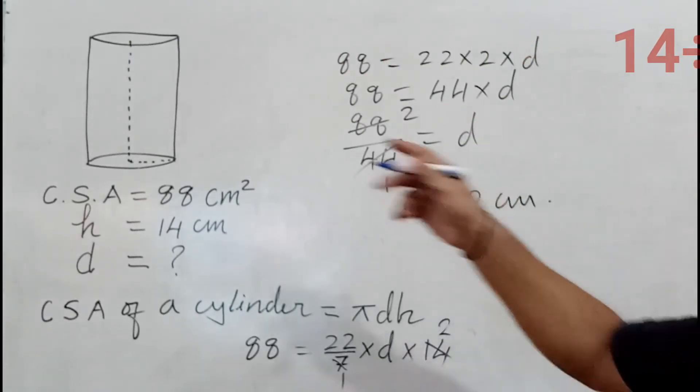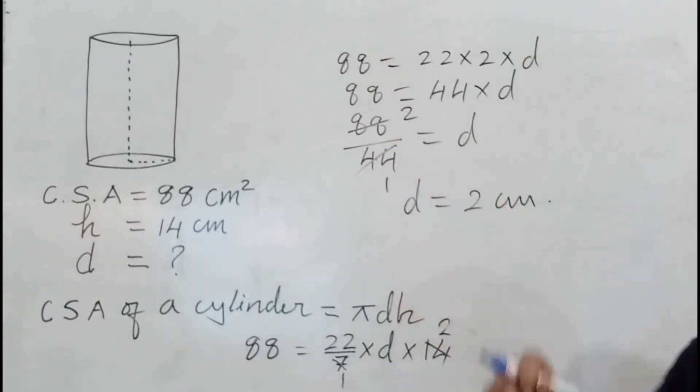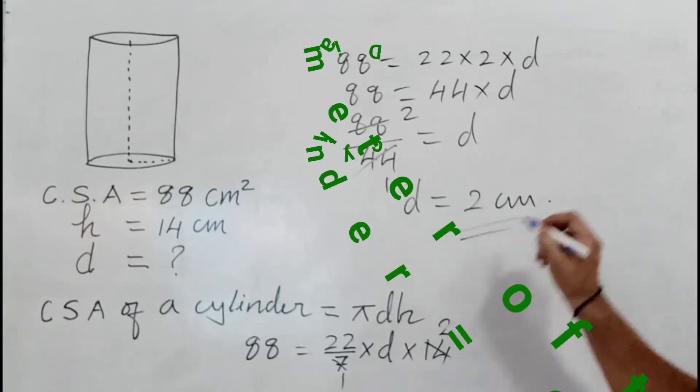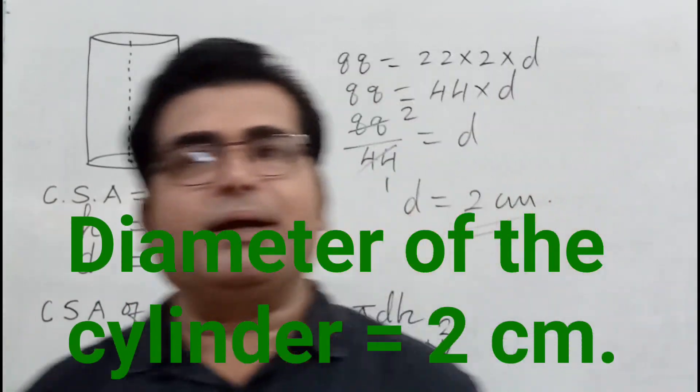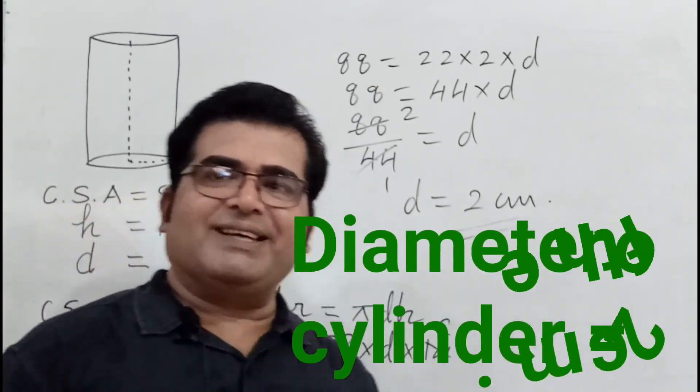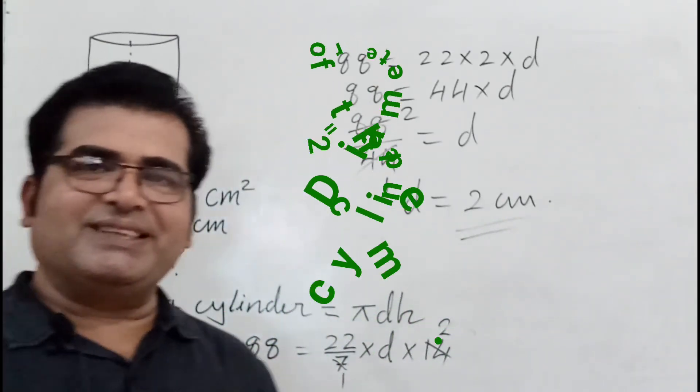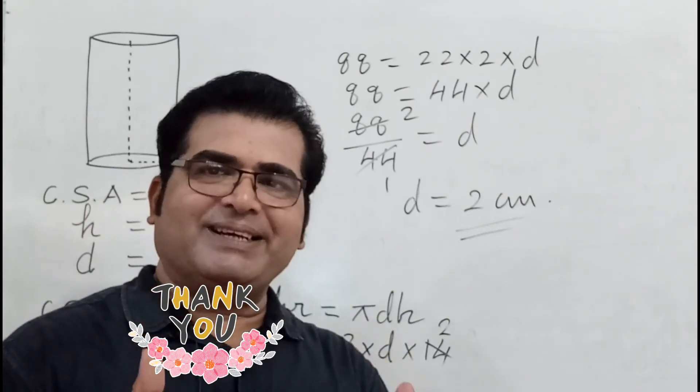d equals 2 centimeters. The diameter of the cylinder is 2 centimeters - that's the required answer. This is how you can find the diameter of a right circular cylinder. I hope you've understood it. Thank you, have a great day.